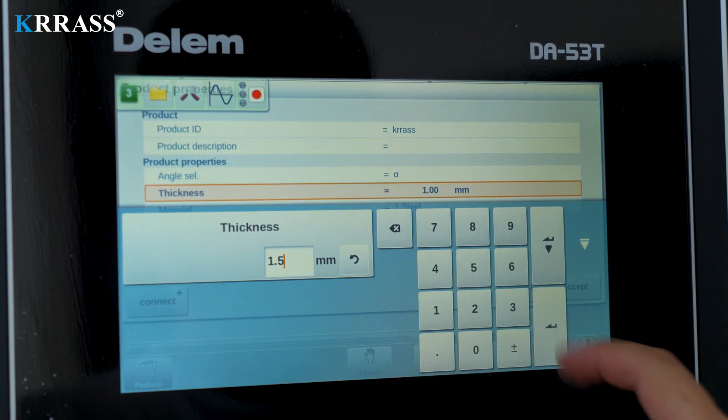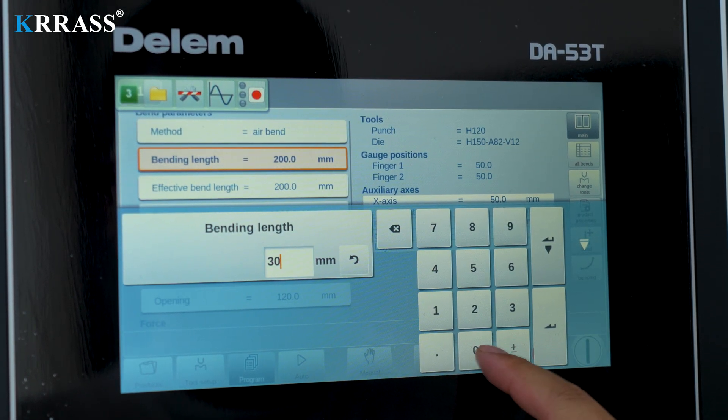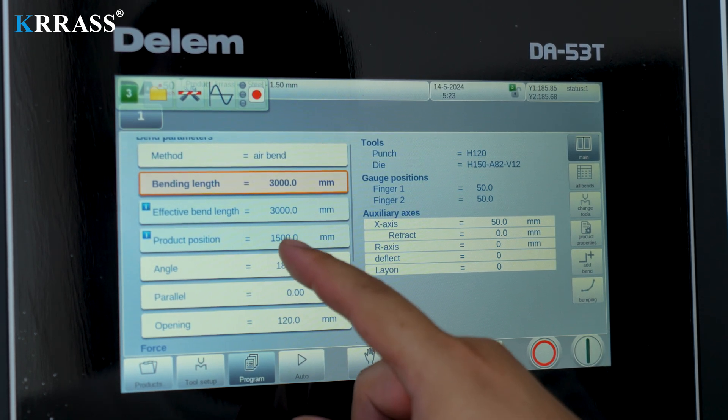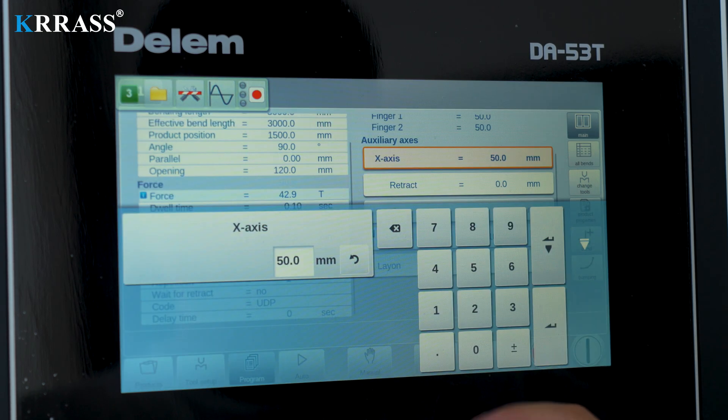We only need to input a few simple parameters, select the corresponding tooling and dies, and the powerful CNC controller will operate the machine according to our instructions, assisting us in completing the corresponding bending tasks.